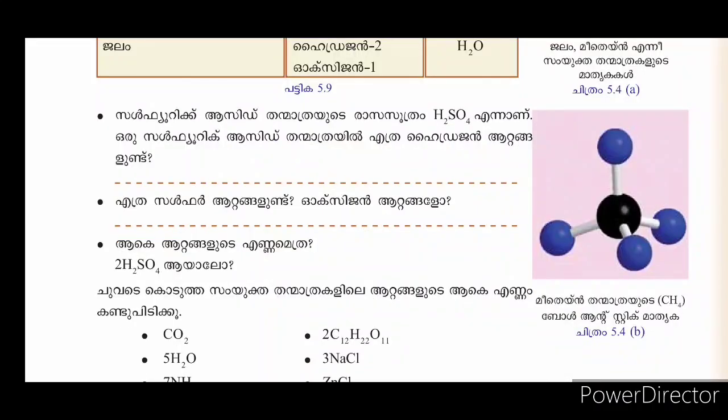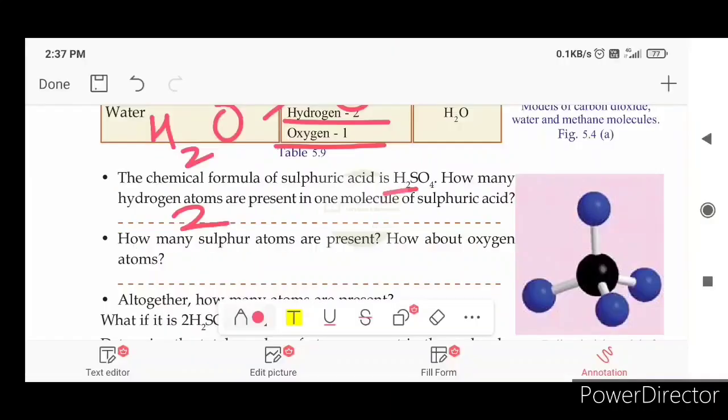Sulfuric acid contains oxygen. How many sulfur atoms are present? S is 1.